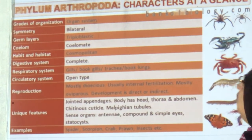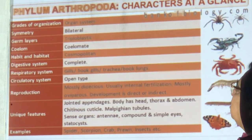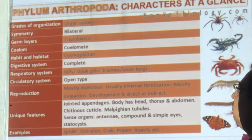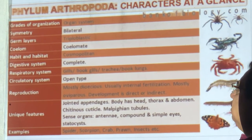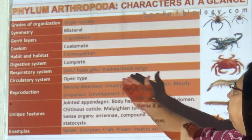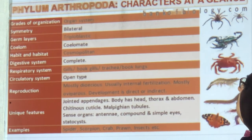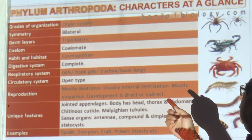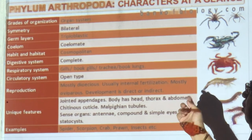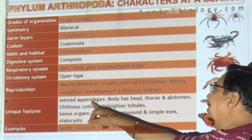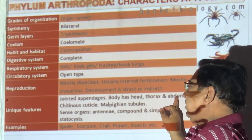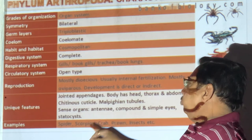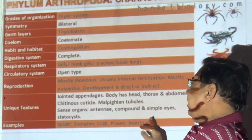Revision of Arthropoda: organ system, bilateral symmetry, three body layers, true coelom, found everywhere (cosmopolitan). Complete digestive system. Respiration by gills, book gills, tracheae, or book lungs depending on whether they live in water or on land. Open circulatory system — no blood vessels going to tissues. Dioecious, internal fertilization, lay eggs, may or may not have larvae. Unique: jointed appendages, head-thorax-abdomen, chitin cuticle, Malpighian tubules for excretion, well-developed sense organs. Examples: spider, scorpion, crab, prawn, insects.